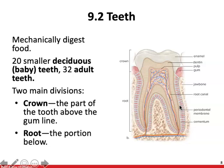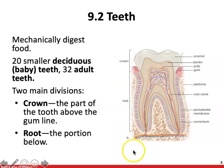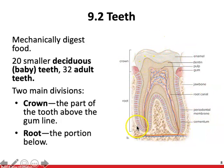Inside the oral cavity we also have teeth, which are responsible for mechanically digesting food. We have 20 smaller deciduous or baby teeth and 32 adult teeth. There are two main divisions to each tooth: the crown and the root. The crown is the portion of the tooth above the gum line — the portion you can see — while the root is the portion below.